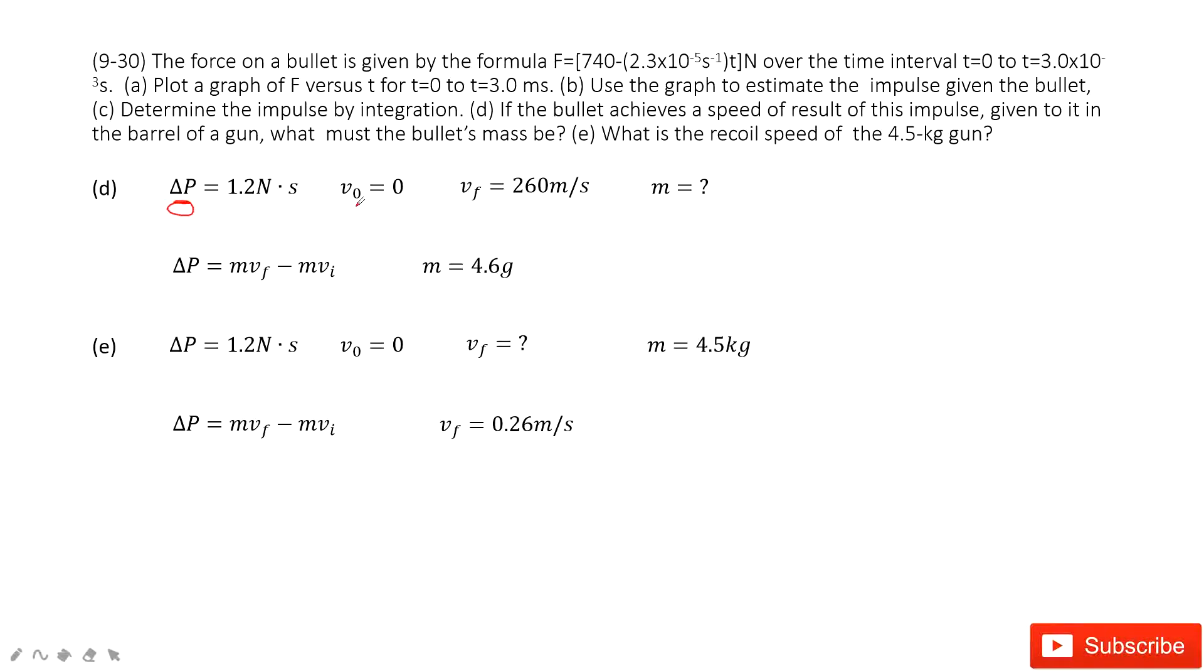And we know for this bullet, the initial velocity is 0, the final velocity is given. And this one you can find from the picture. Agree?